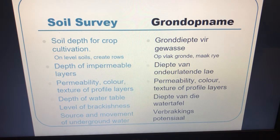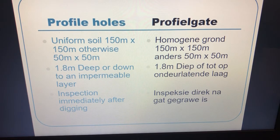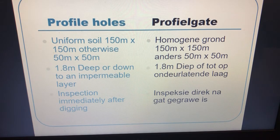You also want to know the level of brackishness, the source, and the movement of underground water — where it moves and where it's coming from. These profile holes can be spaced anywhere from 50 to 150 meters apart. For uniform soils like those in the Free State, 150 meters apart is sufficient; for areas like the Boerland where soil and topography are constantly changing, 50 meters apart. The hole is usually 1.8 meters deep.